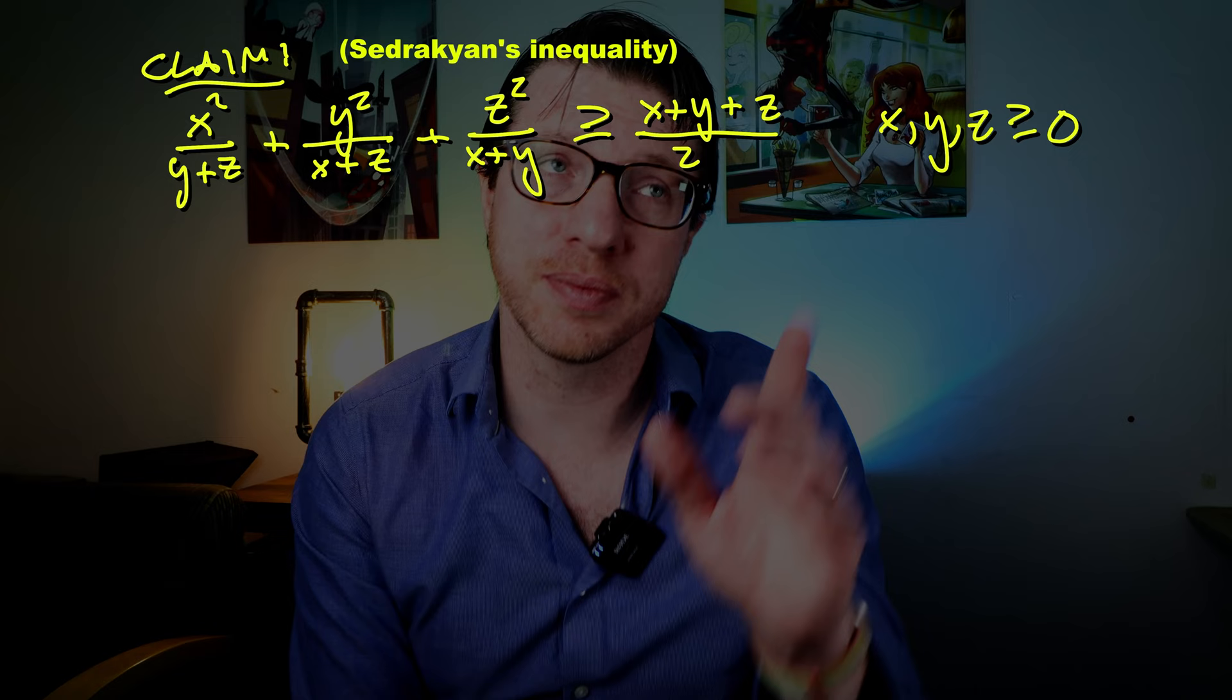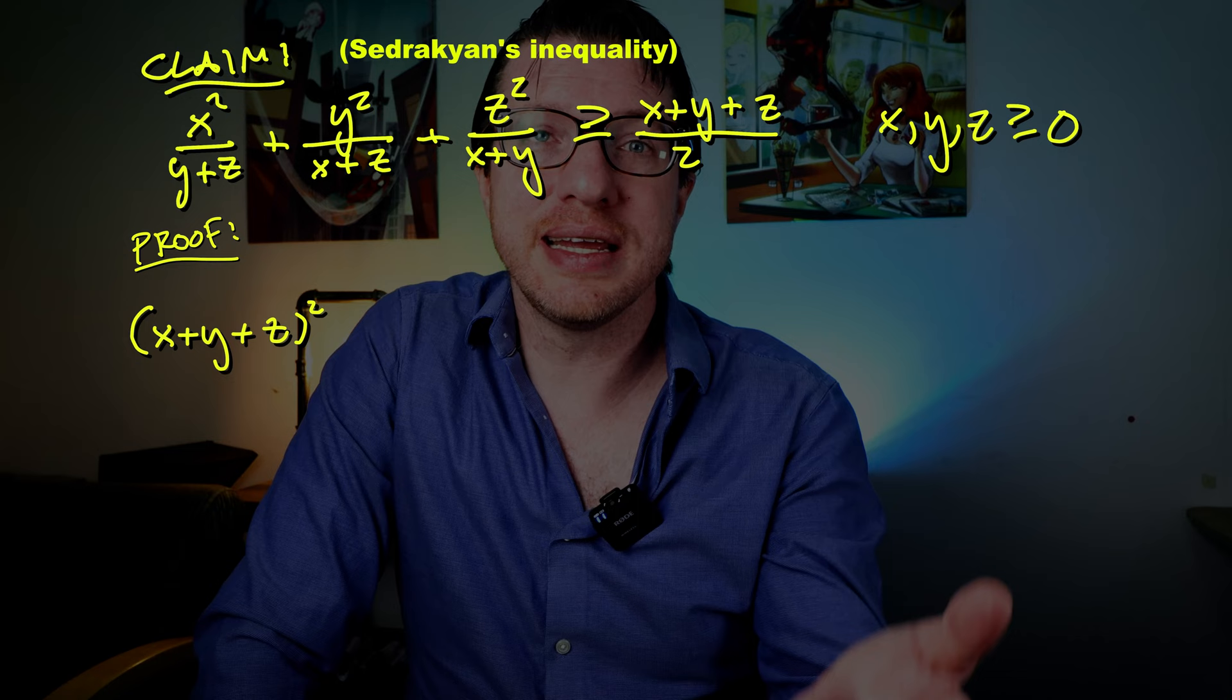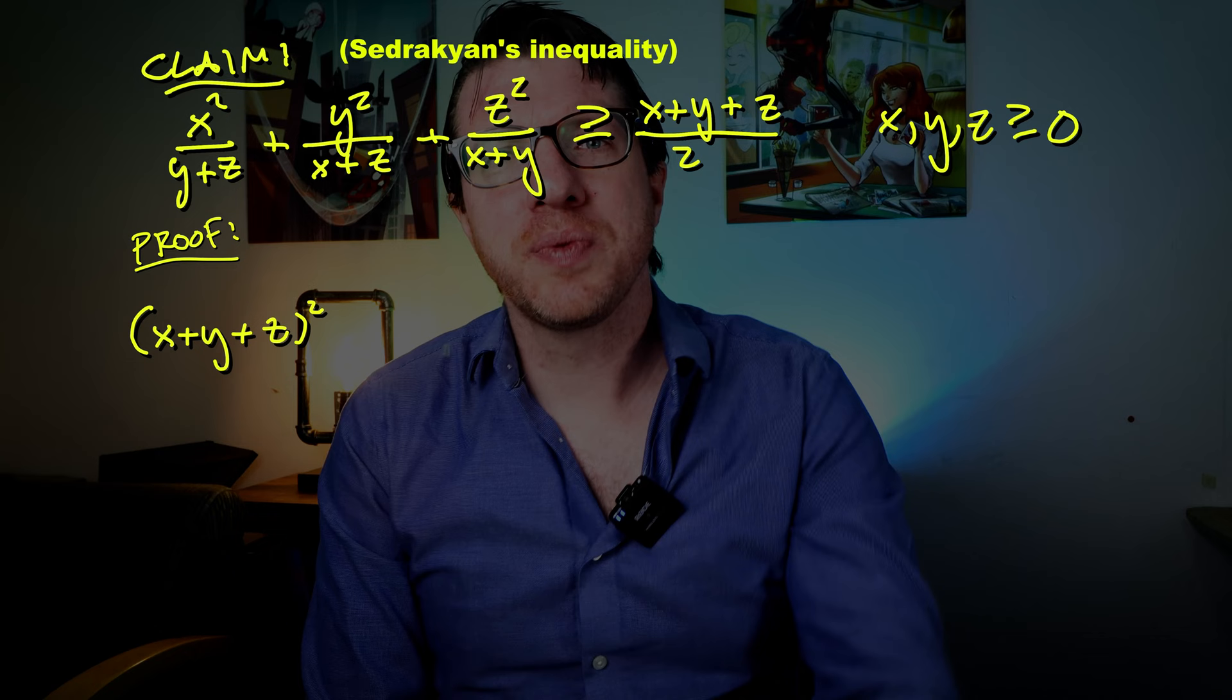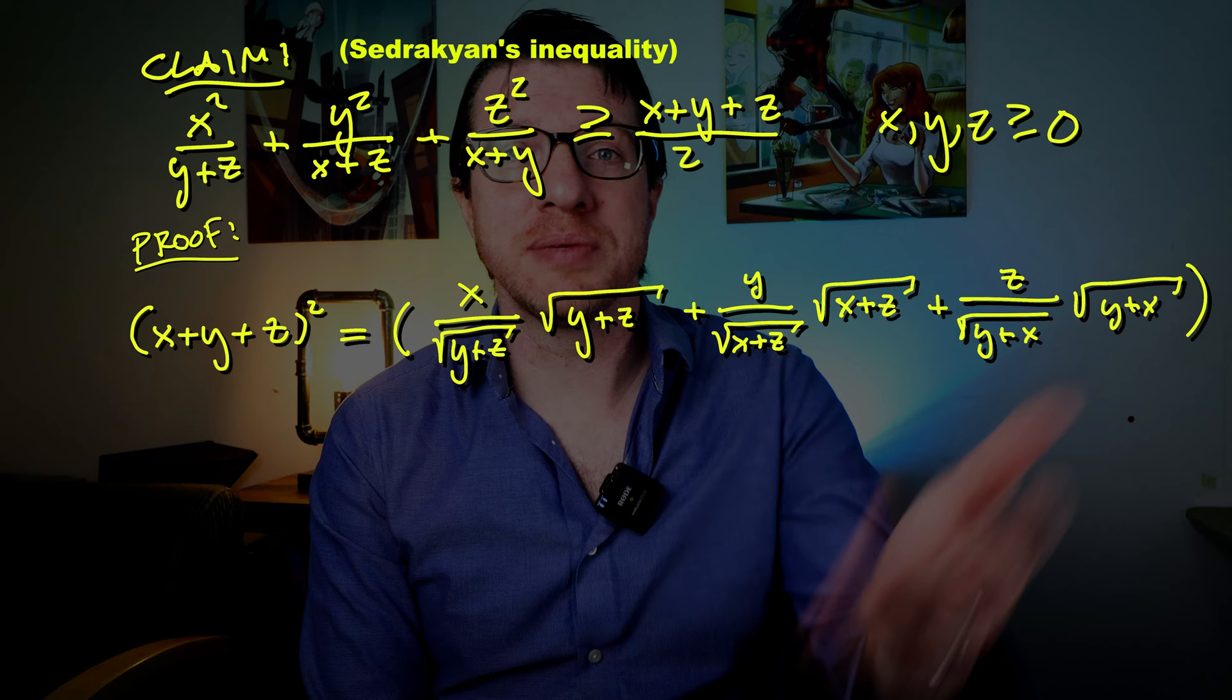So this is pretty slick. We start with (x+y+z) and let's square for the sake of the Cauchy-Schwarz because nobody wants to write square roots a million times. Now we multiply and divide x by the square root of y+z, y by the square root of z+x, and z by the root of x+y.